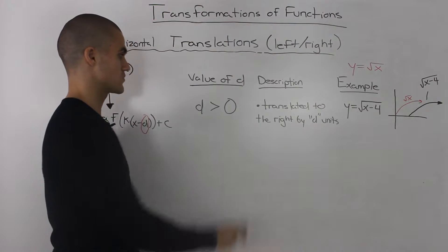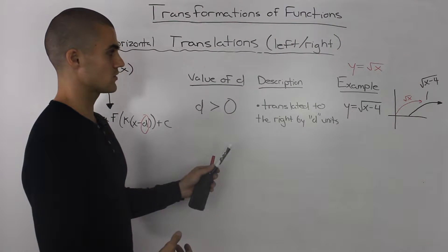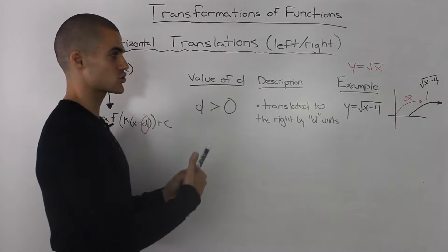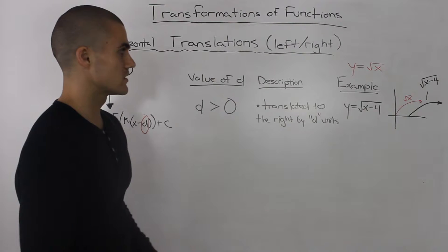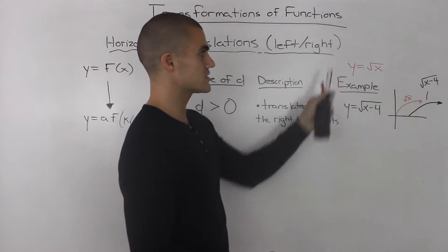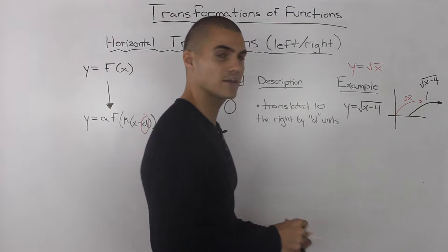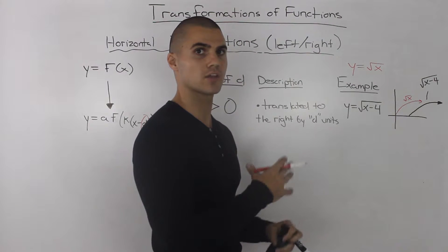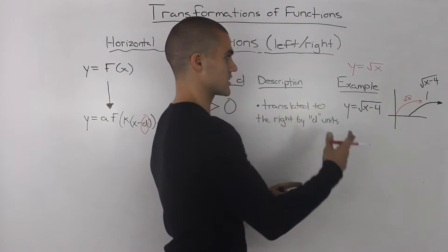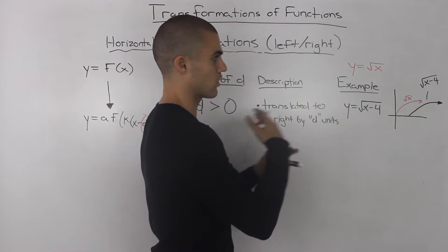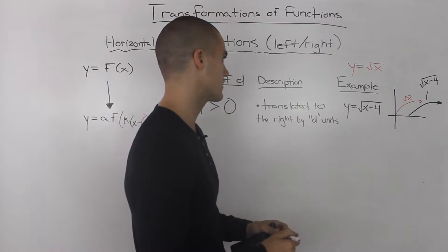The first case we'll deal with is when d is greater than 0. If d is greater than 0, then all that means is that the function is translated to the right by d units. For example, we'll use the same parent function that we used in the previous video — the square root of x. You can actually use any parent function for these examples, but the square root of x is easier to show with horizontal translations because there won't be any crossing of the functions.